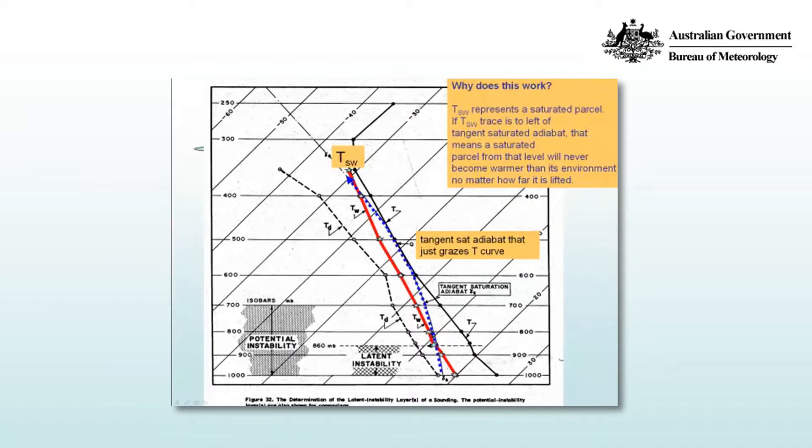Now consider parcels of air on the wet bulb temperature profile to the left of the tangent saturation adiabat. Parcels lifted from this curve will follow a saturated adiabat that never crosses the temperature profile. Whereas parcels lifted from the wet bulb profile to the right of the tangent saturation adiabat will ascend along saturated adiabats that eventually cross the temperature profile, becoming warmer than the environment and therefore unstable.